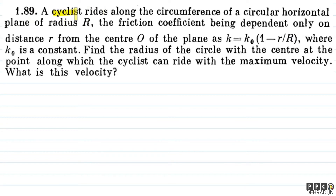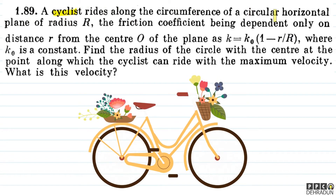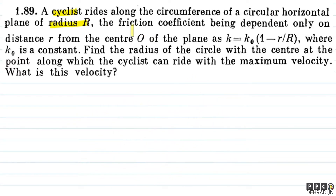The question says: a cyclist rides along the circumference of a circular horizontal plane of radius capital R. The friction coefficient is dependent only on distance small r from the center O of the plane as k = k₀(1 - r/R), where k₀ is a constant. Find the radius of the circle along which the cyclist can ride with the maximum velocity. What is this velocity?